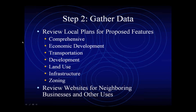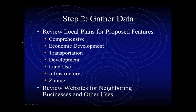Review local plans for proposed features. Talk to the planners because they know what's coming. The documents they generate come by a variety of names — comprehensive plans, economic development plans, state transportation improvement plans, capital improvement plans, land use plans, infrastructure plans, and zoning documents. Zoning can show you what's proposed for the future even if there's no active development program. Talk to local planners about what's coming five and ten years from now, because the regulation encourages you to use data ten years in the future.